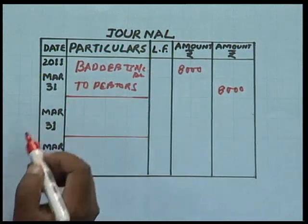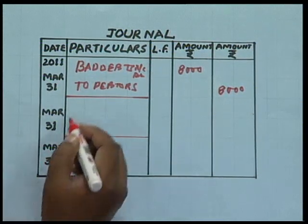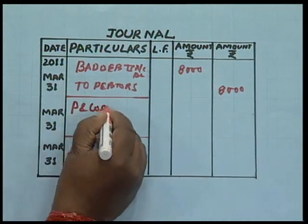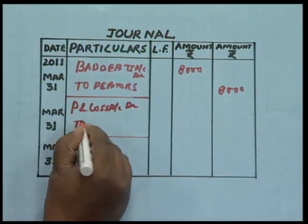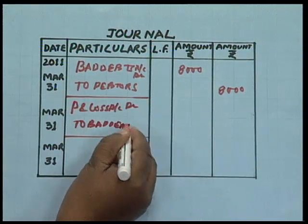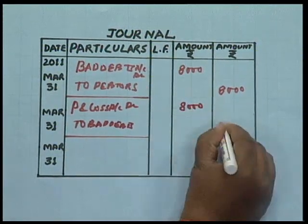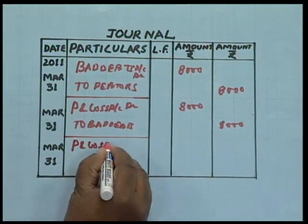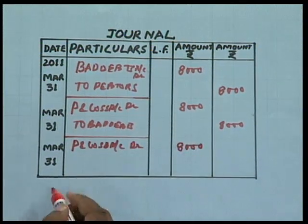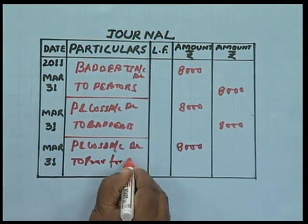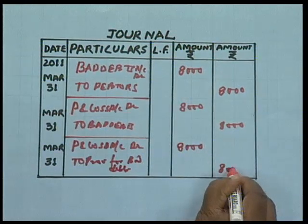After passing the entry for bad debts, it is transferred to the profit and loss account by passing the entry: Profit and Loss Account Dr. to Bad Debts — Rs. 8,000. So out of Rs. 88,000, Rs. 8,000 is deducted, leaving remaining debtors of Rs. 80,000. We then make a provision at 10% of Rs. 80,000, which equals Rs. 8,000. The entry is: Profit and Loss Account Dr. Rs. 8,000 to Provision for Bad Debts Account Rs. 8,000.